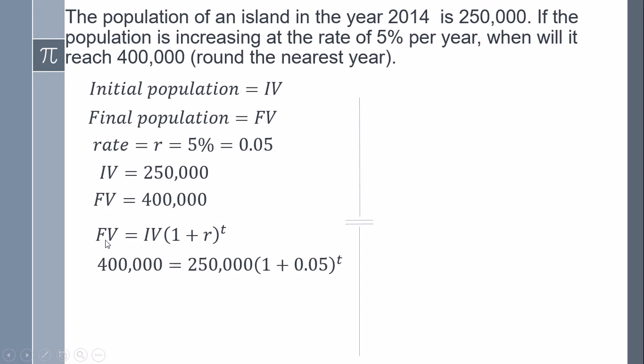We have already the final value which is going to be 400,000, we have already the initial value which is this one, and we already have the rate, so we need just to solve for T. So first I divide this one which is multiplied.